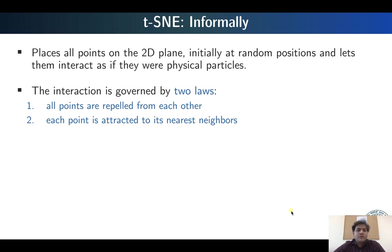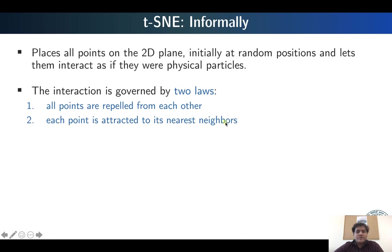Let us talk about the algorithm informally first. The goal of T-SNE is to place all the points on the 2D plane — projecting everything onto two-dimensional space. The most common practice is to initially place them at random positions, then treat them as physical particles interacting with each other. This interaction is governed by two laws: all points are repelled from each other, but at the same time each point is attracted to its nearest neighbor in the high dimensional data. There is a combination of attractive and repulsive forces that finally helps in preserving this local structure.